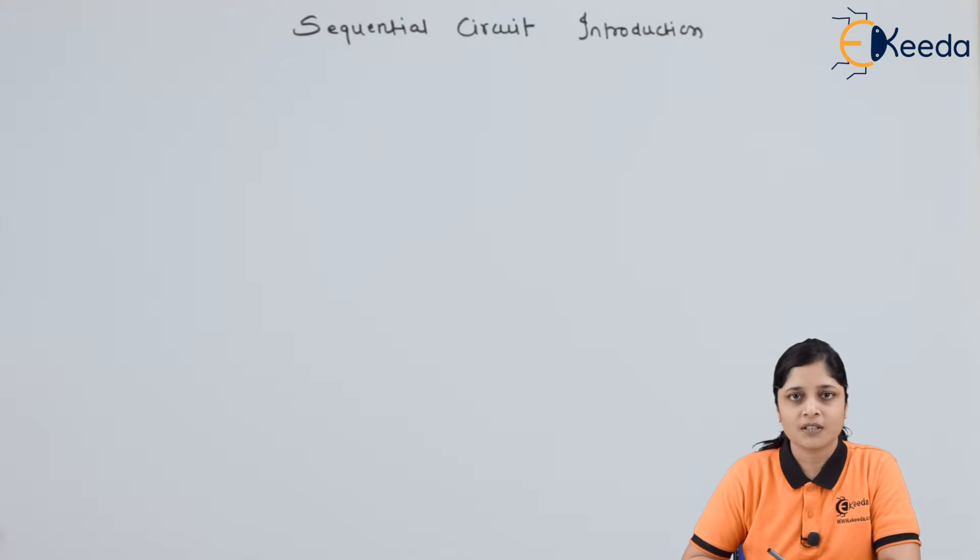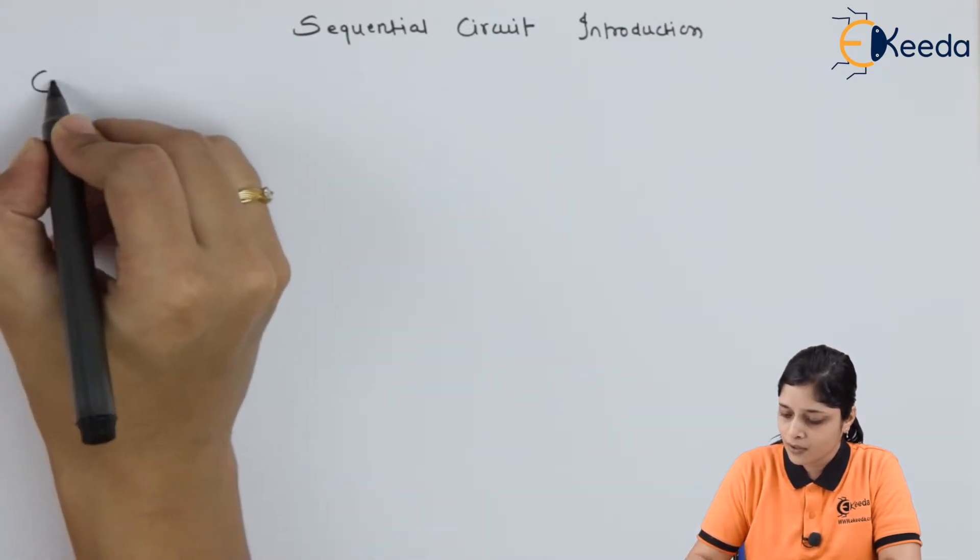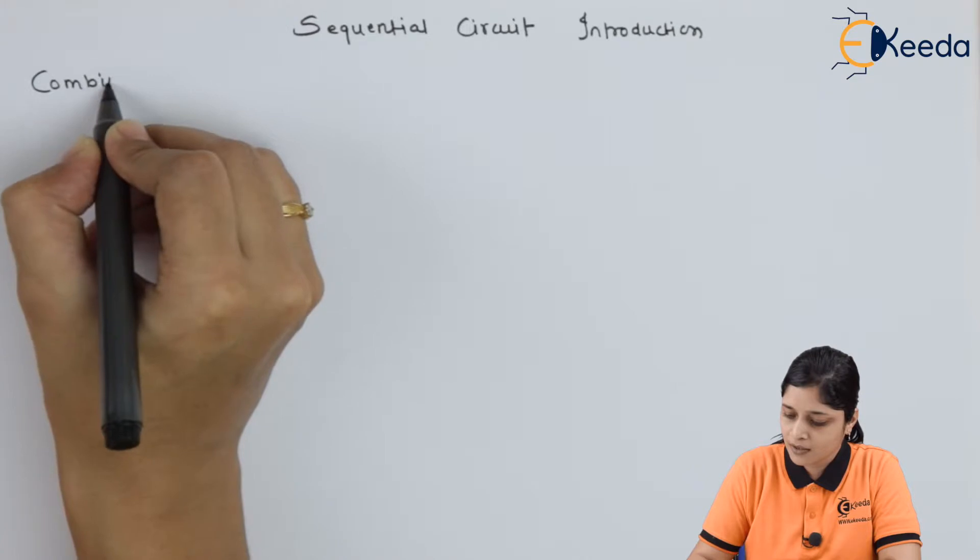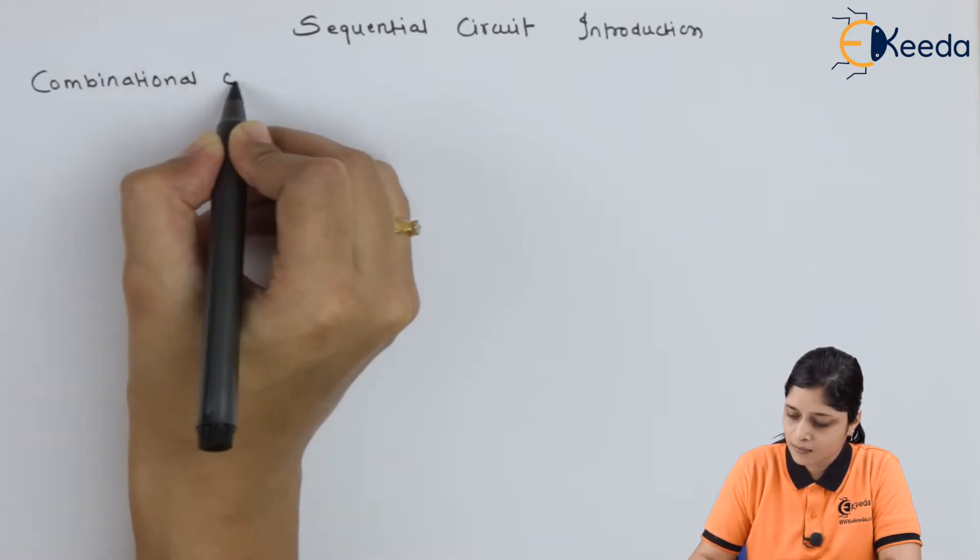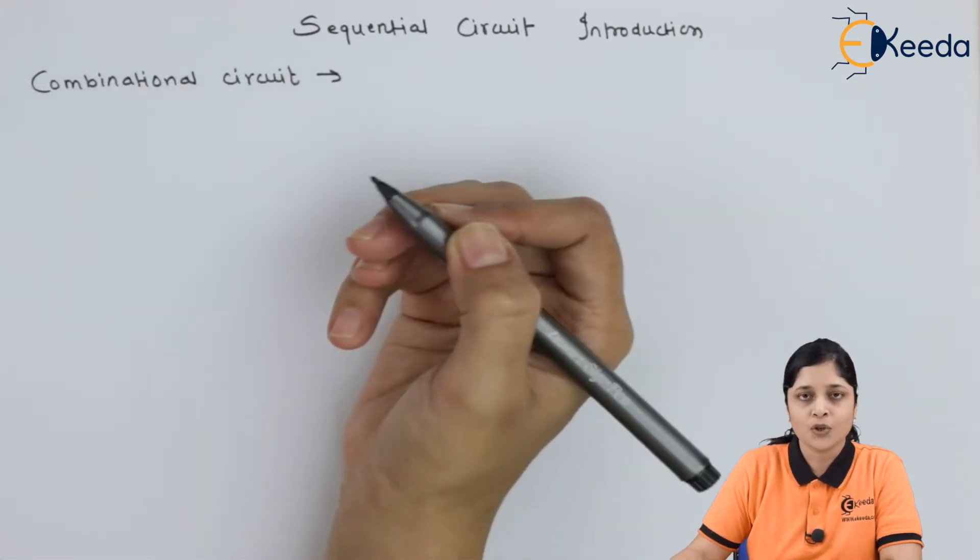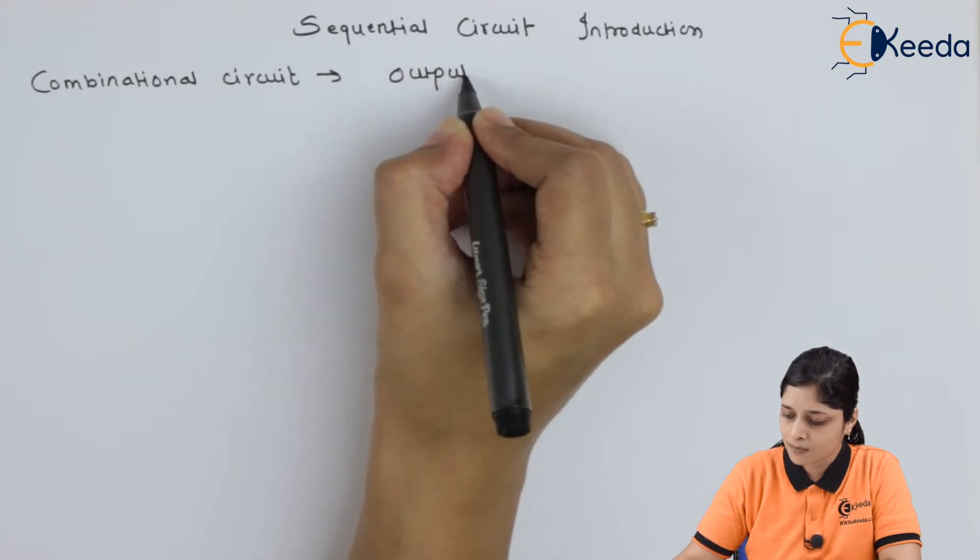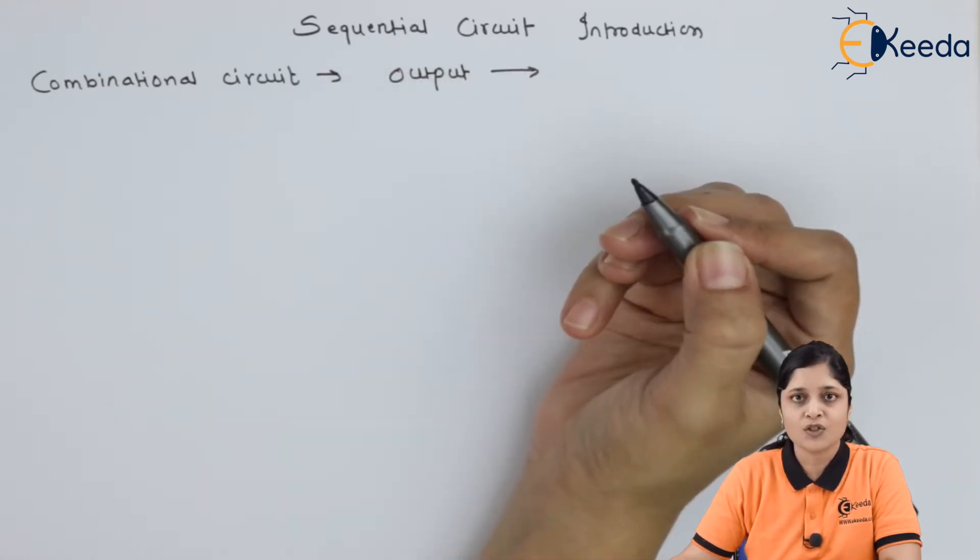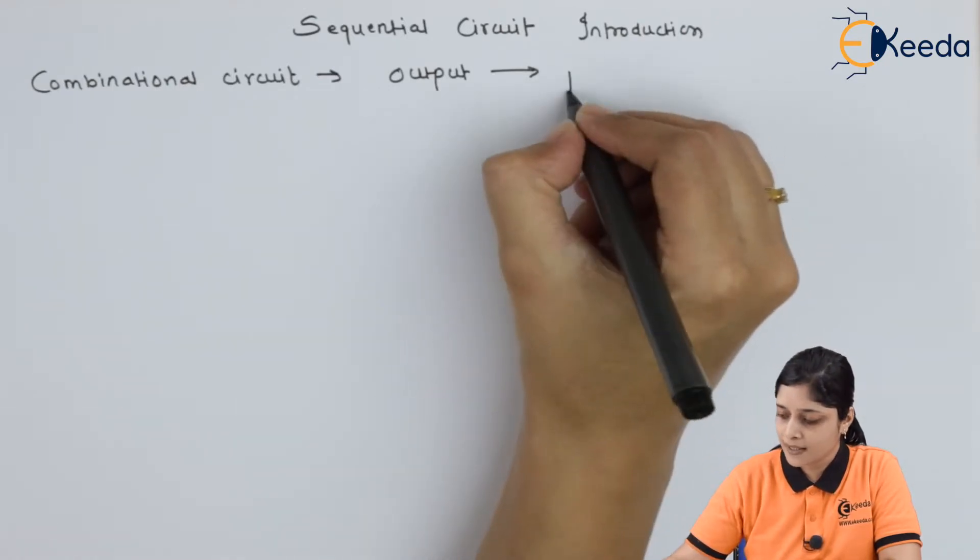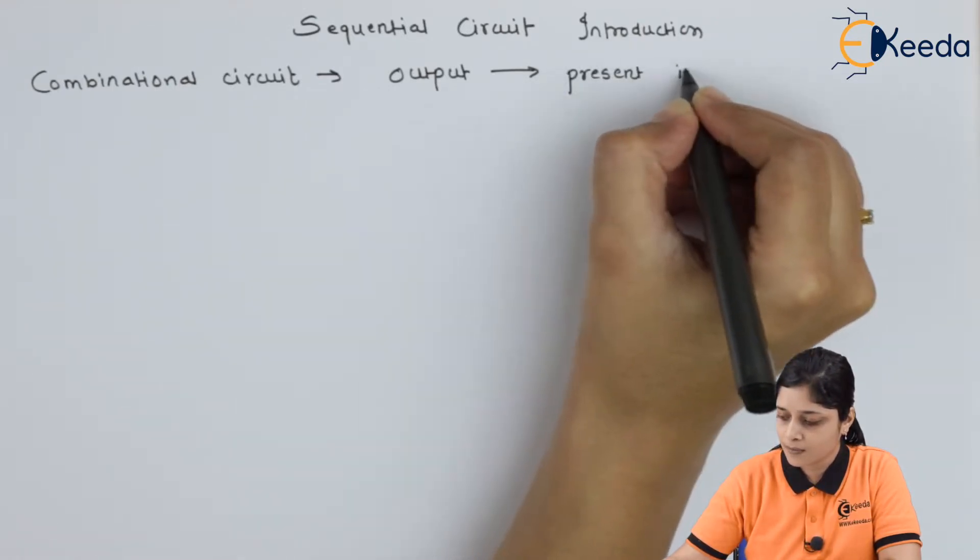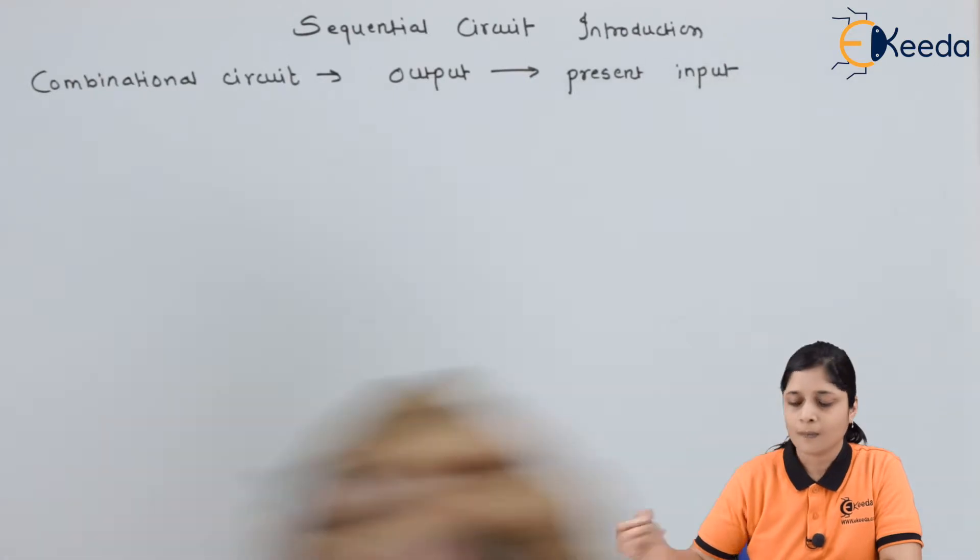In combinational circuit, what was the important point? For the combinational circuit, your output depends on present input only.